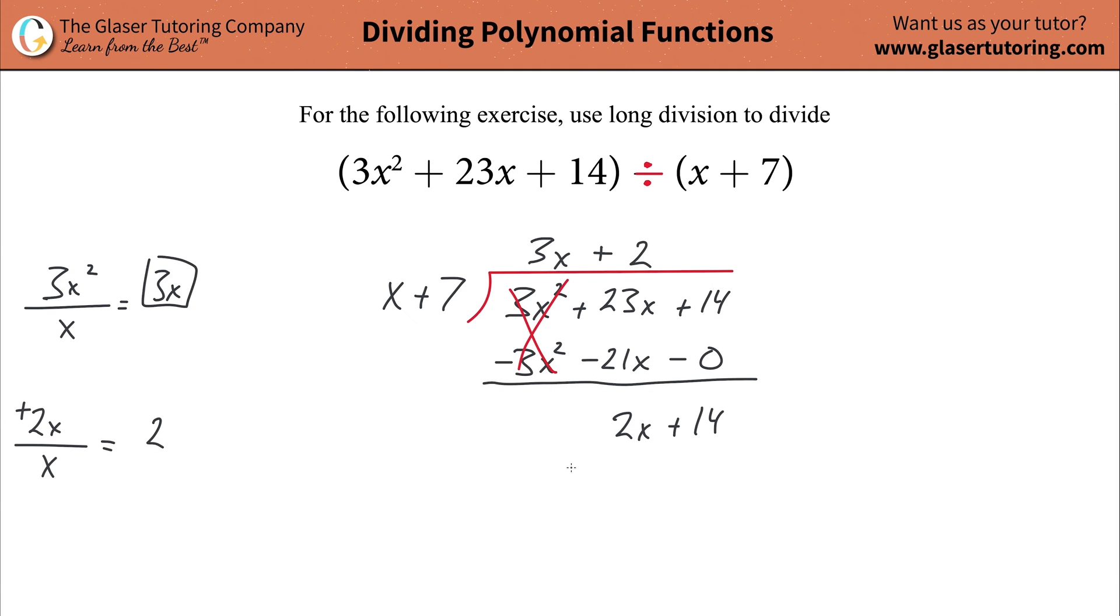Now you're going to do the same process. Take your subtraction symbol, write out your parenthesis, and now do your multiplication. Take this number 2, multiply it by the x, so you get 2x. Then take the 2 and multiply it by the 7, so you get 14, and it's positive 14 because positive 2 times positive 7 is positive 14.